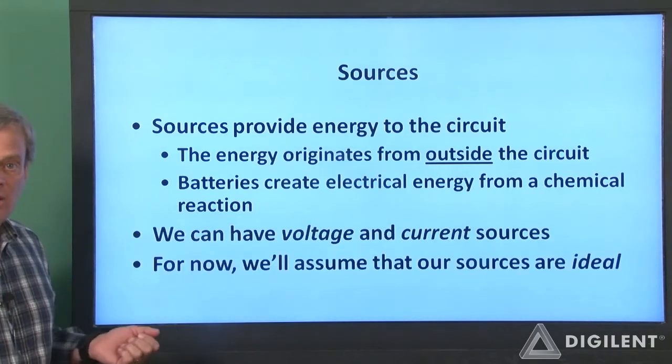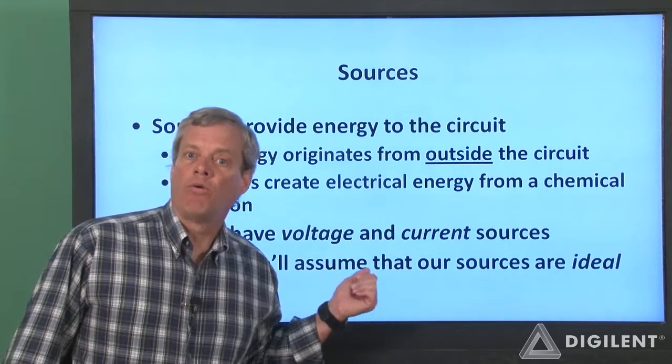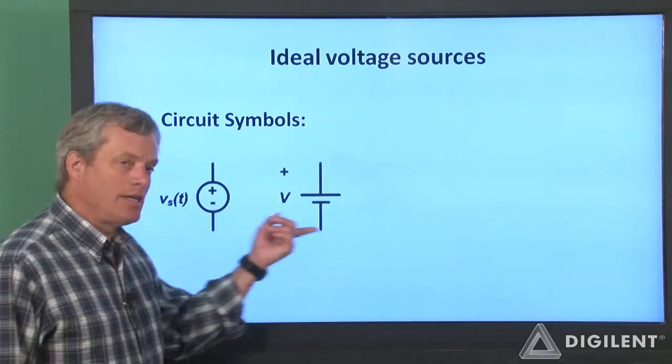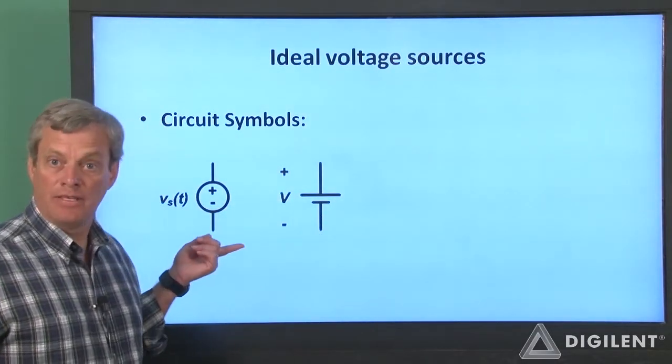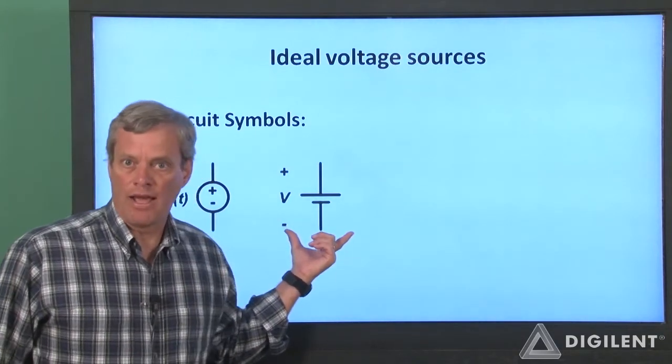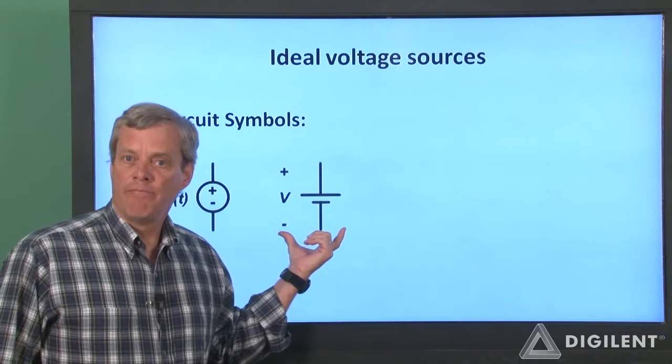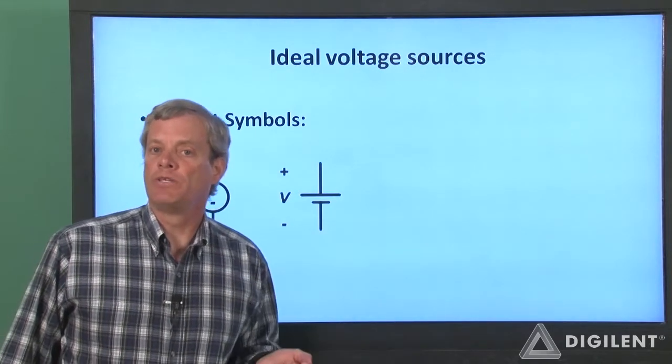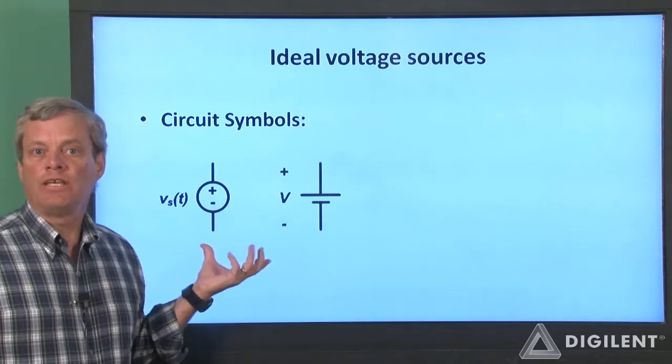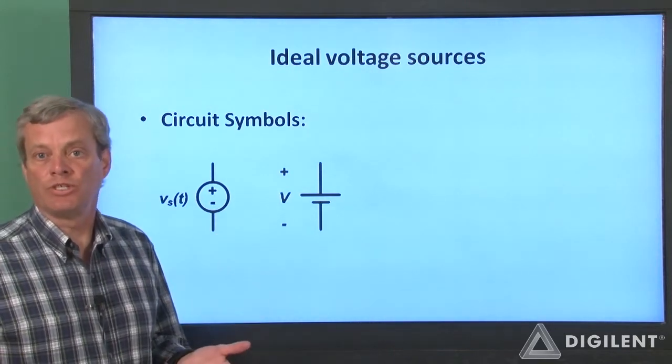As I mentioned in the introduction, we'll only talk about what are called ideal sources for now. Ideal voltage sources are usually indicated on circuit schematics by these symbols. The symbol to the left is slightly more general than the one to the right. The symbol on the right indicates a battery and is only used to represent constant voltages. The symbol on the left can be used to represent either constant or time varying voltages.